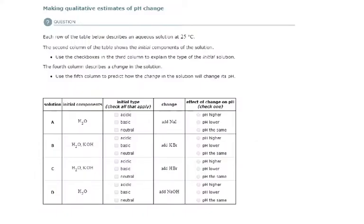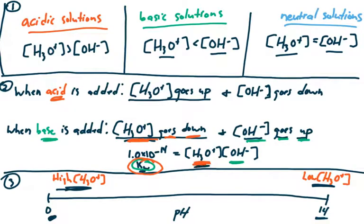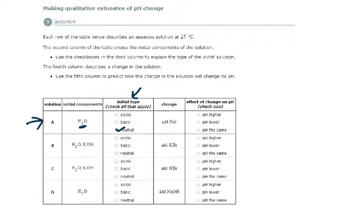So now let's look at this topic and see what we can do with it. So for solution A, the initial components of solution A is just water. So if it's just water, what is the initial type of the solution? It's going to be a neutral solution to start with. Yes, water does ionize, but the auto-ionization of water, the concentration of this and this for pure water are exactly the same, 1 times 10 to the negative 7. And so that would be a neutral solution because the concentrations are equal.